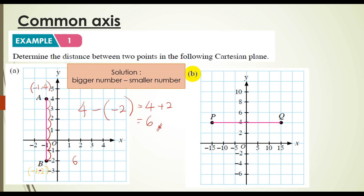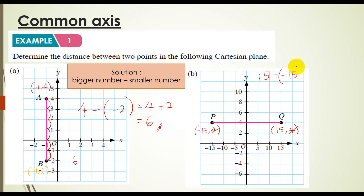Okay, kita tengok pada B. B ni — untuk apa yang sama? Paksi mana yang sama? Kita tulis dulu koordinat dia. Biasakan tulis koordinat. Maknanya untuk P, koordinat dia adalah negative 15, 4. Untuk point Q, koordinat dia adalah 15, 4. Mana sama? 4 dengan 4 ni sama kan? Maknanya dia common pada Y axis. So, macam mana nak kira jarak? Ambil nombor besar tolak dengan nombor kecil — 15 tolak dengan negative 15 — awak akan dapat 15 tambah 15. So, jawapan dia adalah 30 unit.